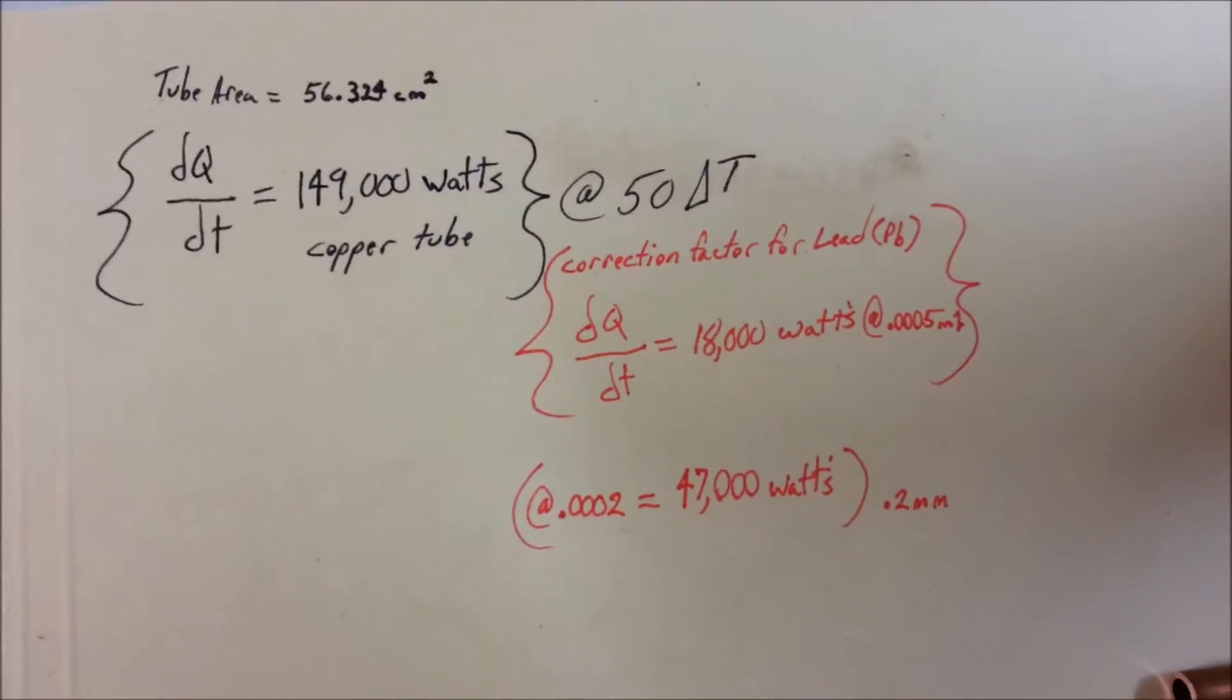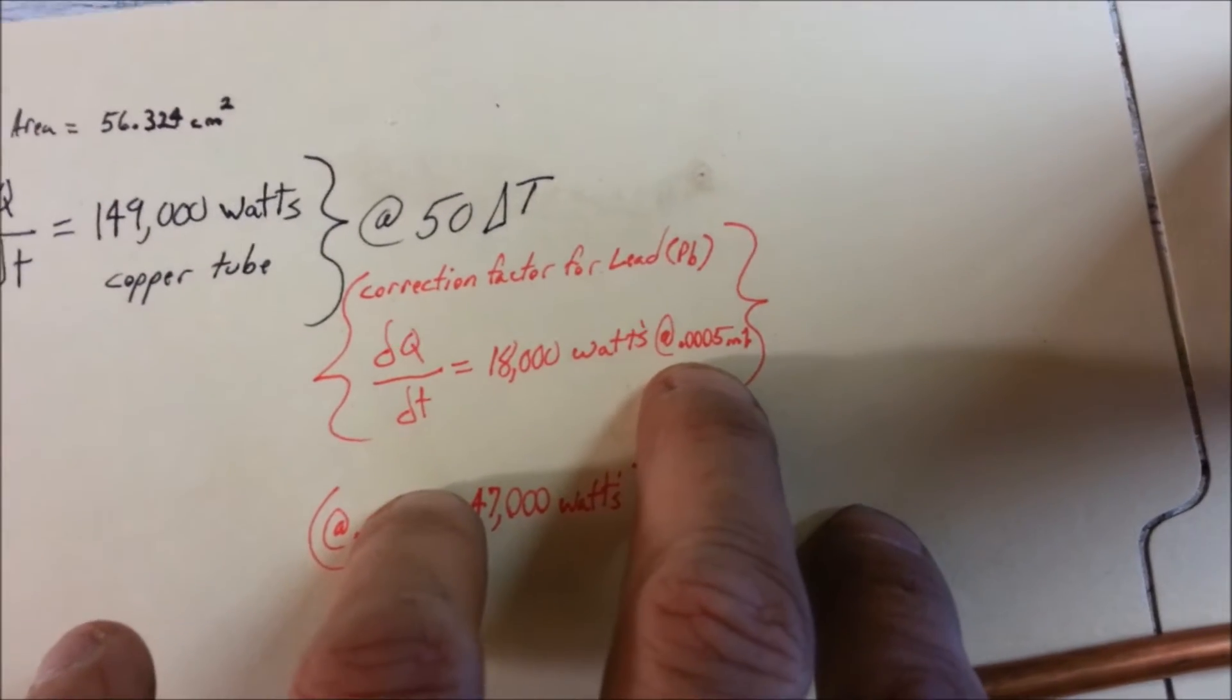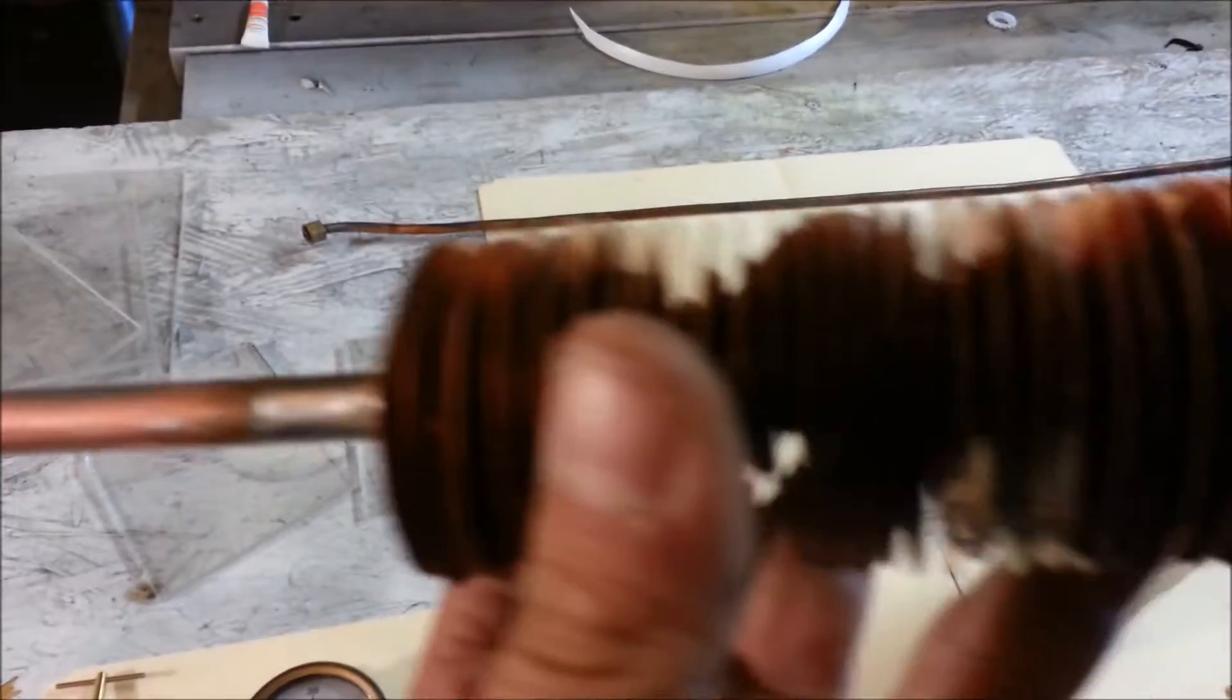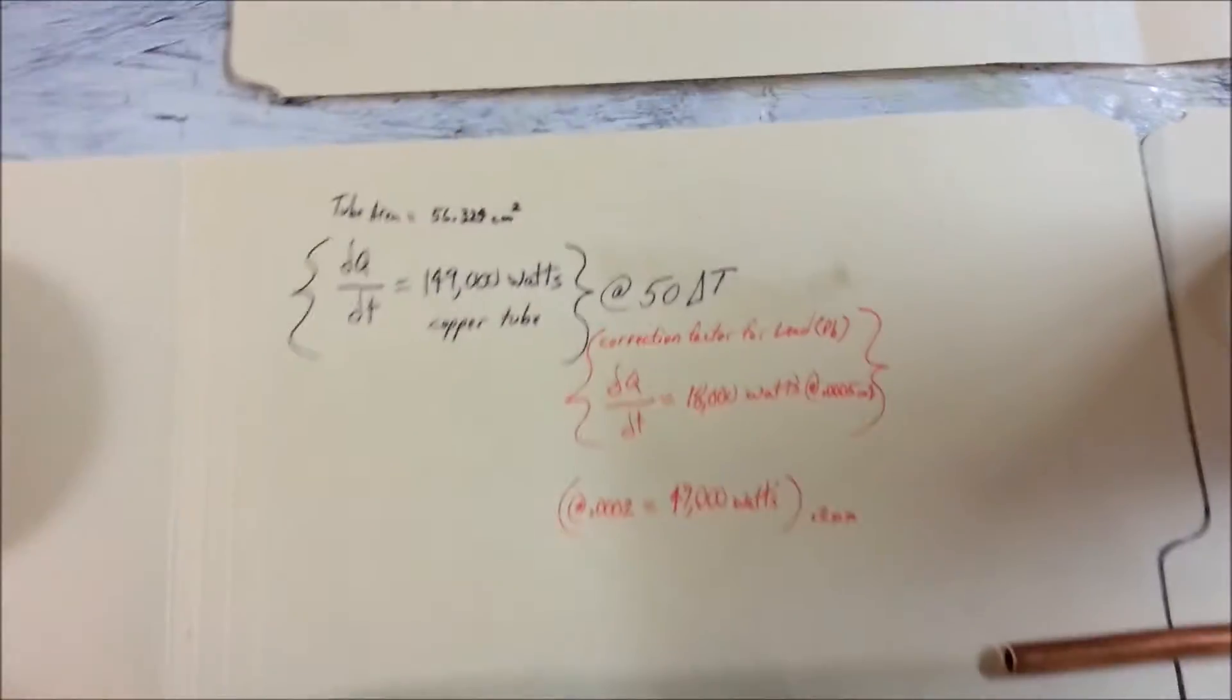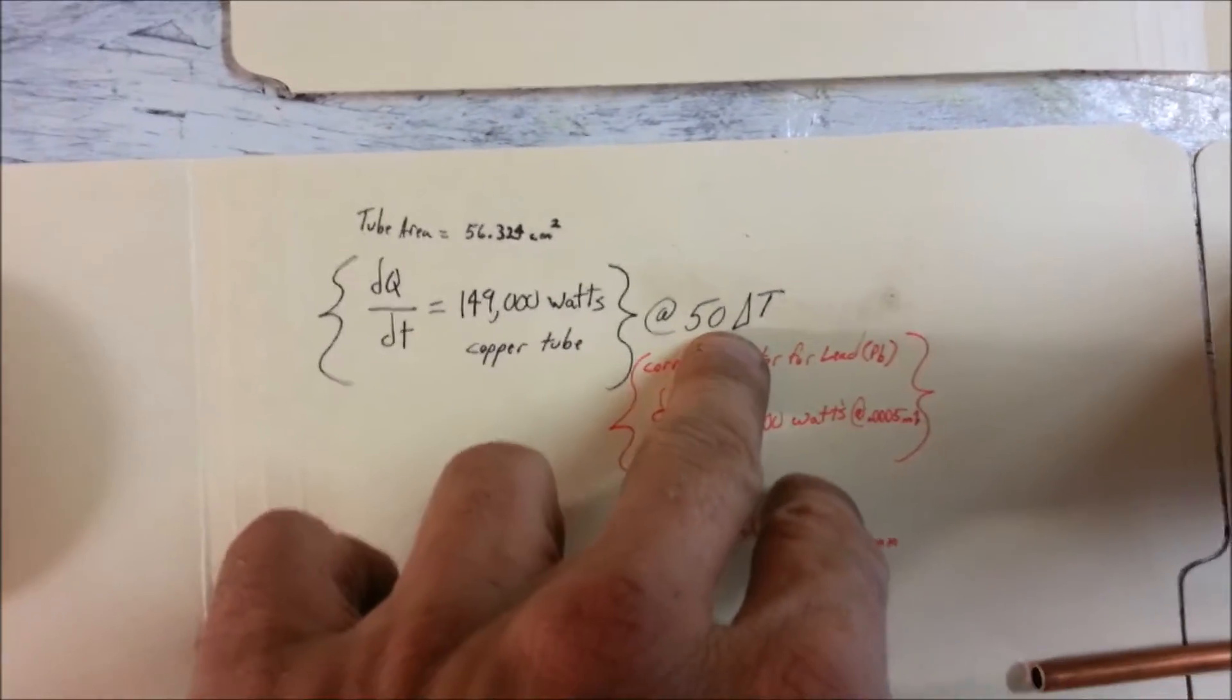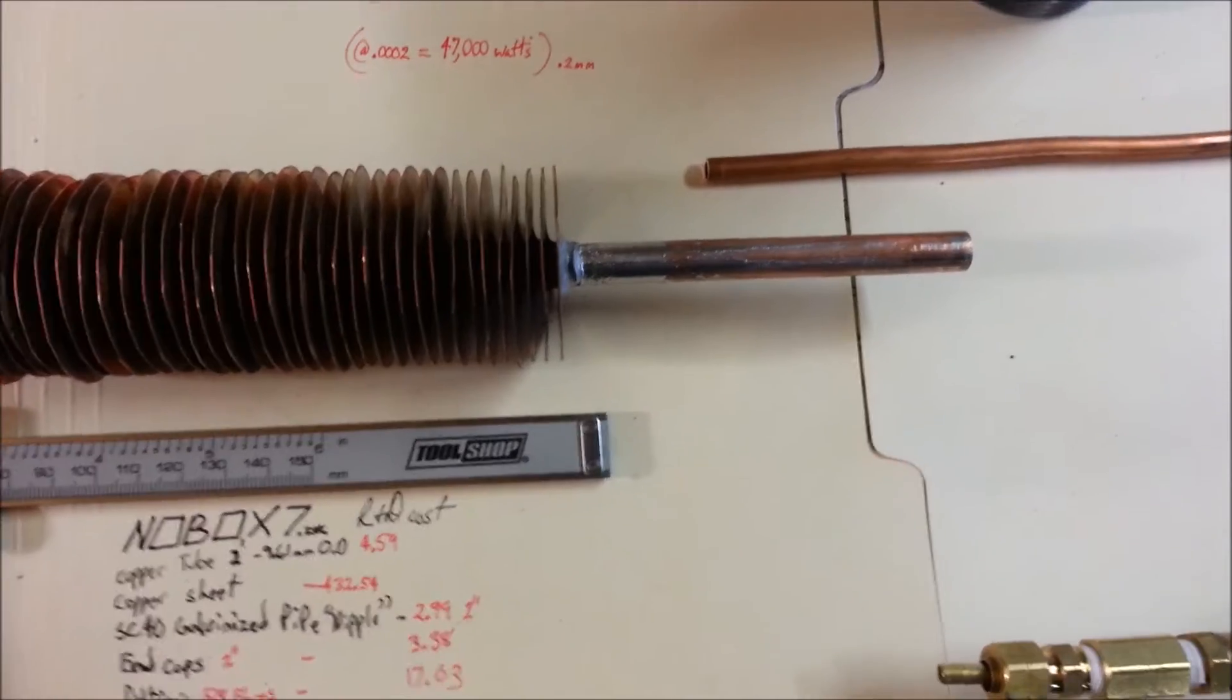Turns out that because I use lead solder, I'm actually limited to 18,000 watts at a 5.5 millimeter thickness of solder. As you can see on this unit, there's quite a bit of lead solder. It's actually a tin lead alloy. And I did not look at the thermal conductivity constant of tin. But I think for a test apparatus this will suffice. But again, if it were all copper, the tube alone would be capable of transferring 149,000 watts a second at a 50 degree temperature change.